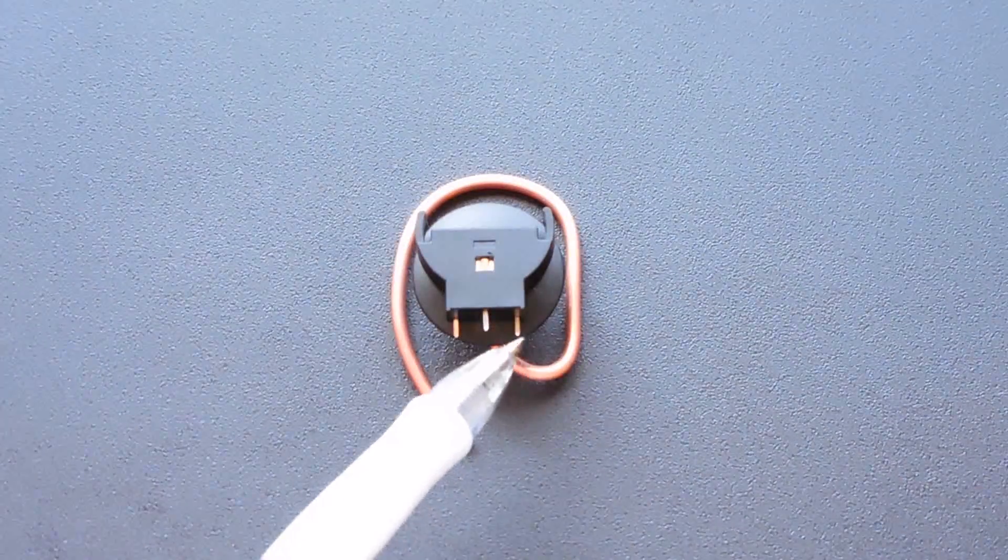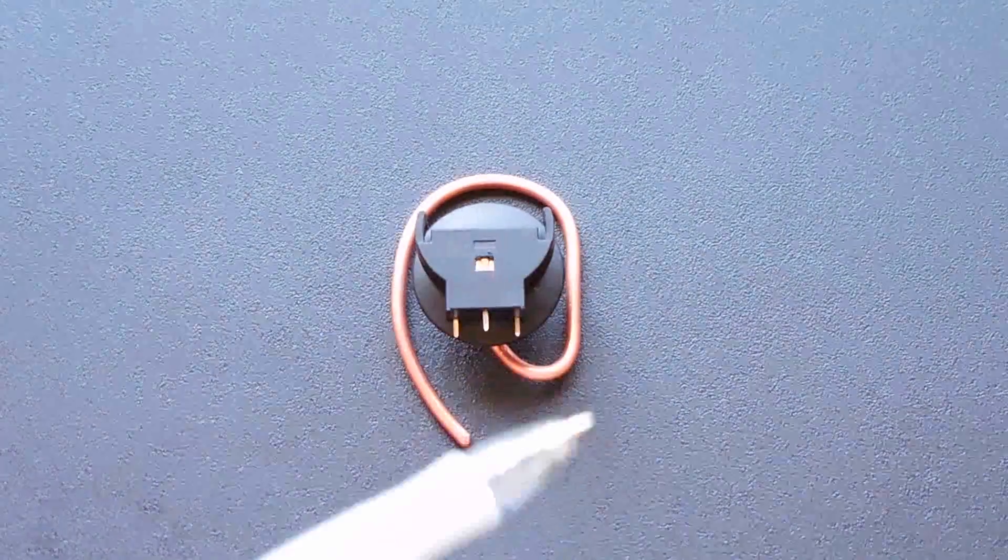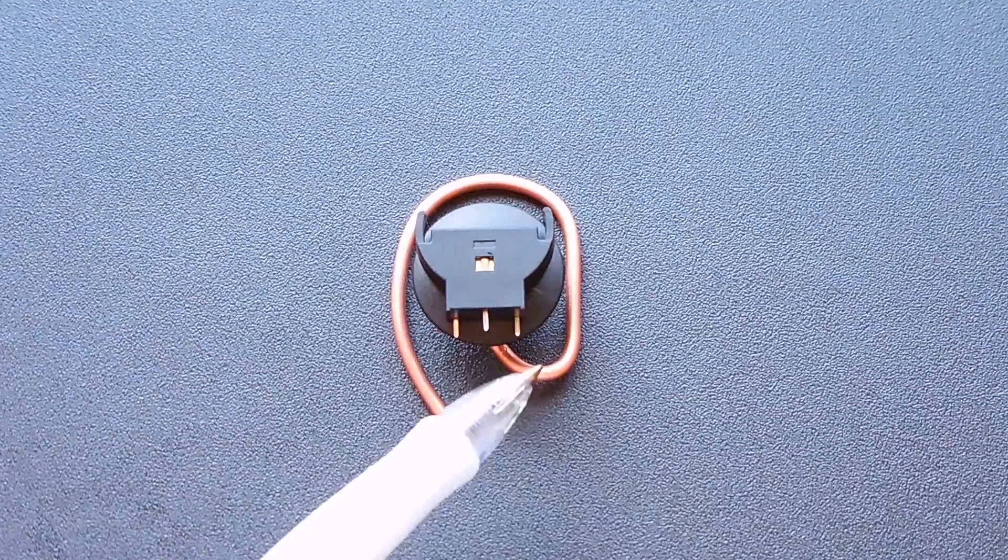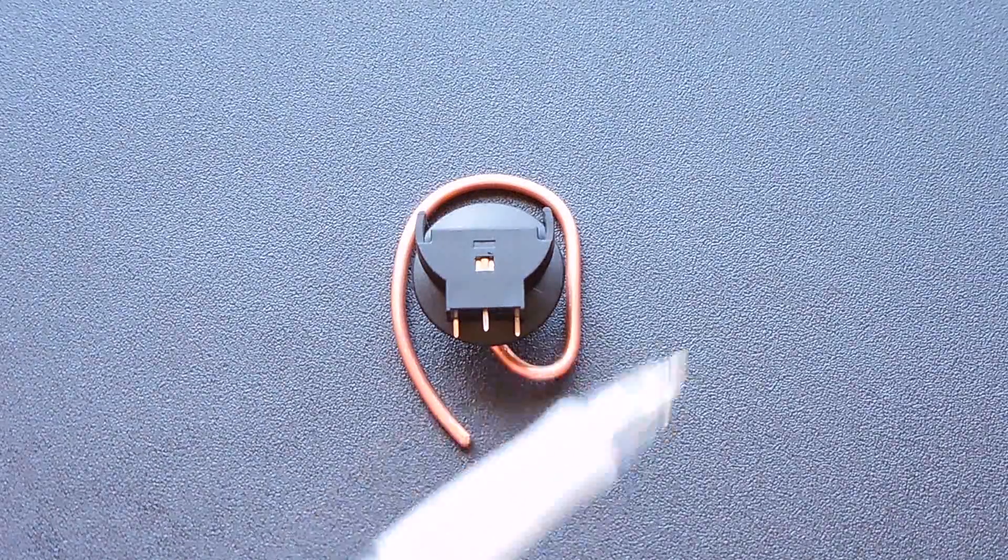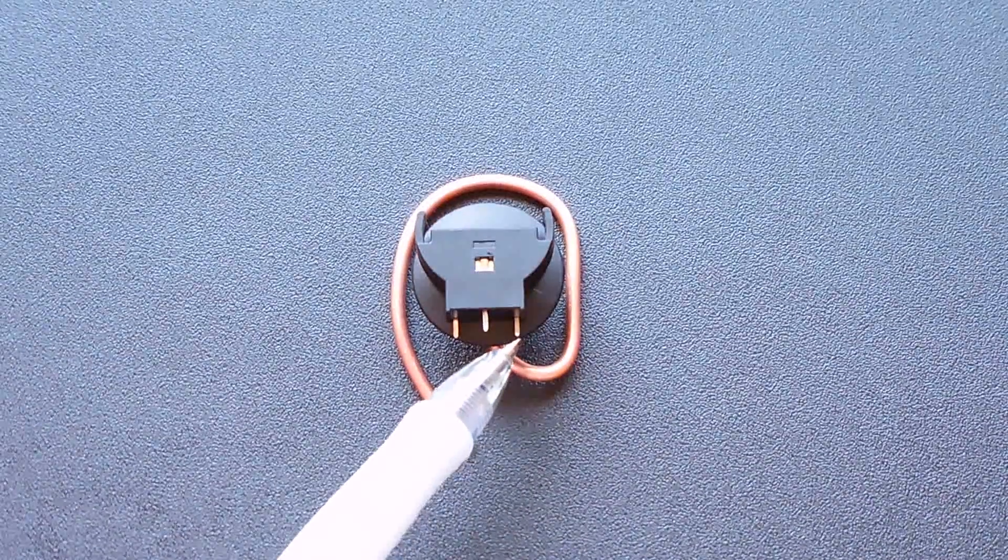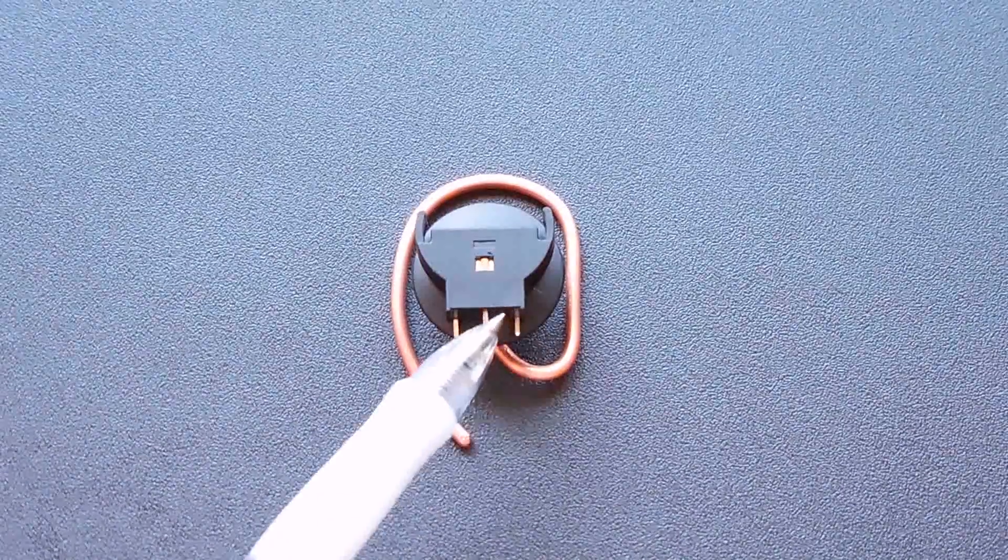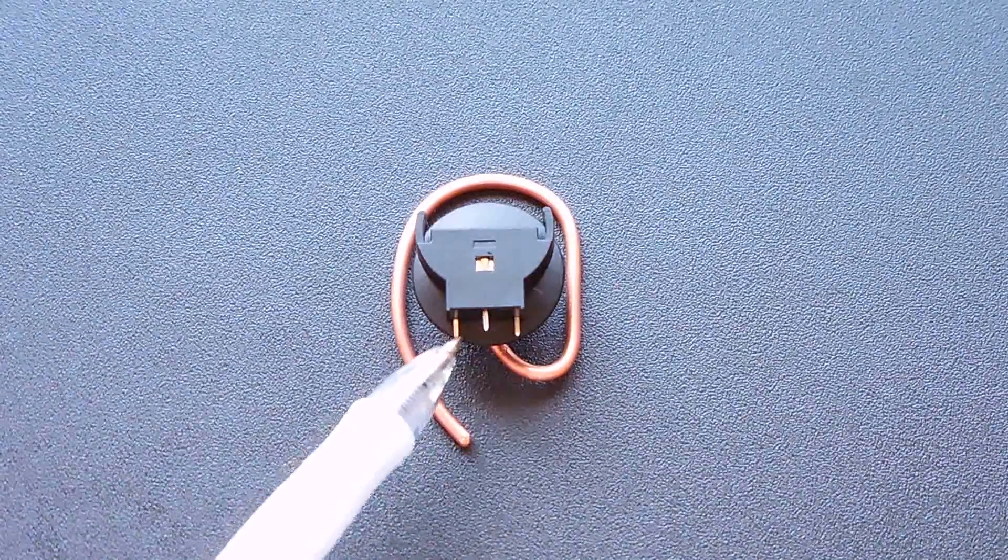The next thing you're going to do and you could have also done it before this step, I took a pair of diagonal cutters, small ones, and cut it after the fact. Just cut off this pin coming from the battery holder right here. You only want the center and the left.